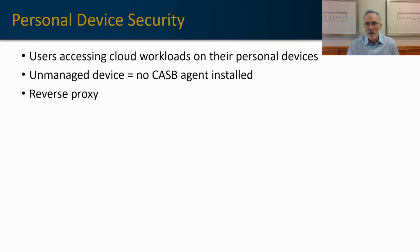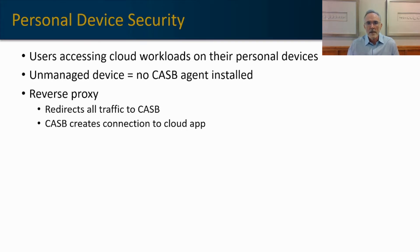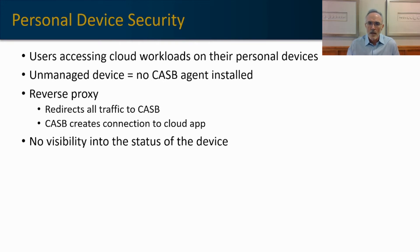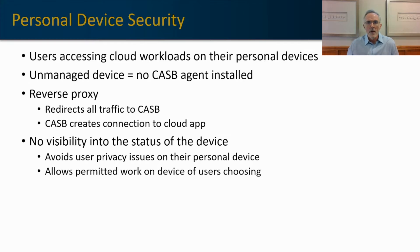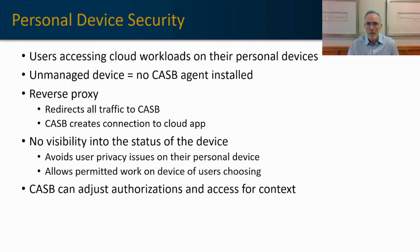CASB resolves that problem by implementing a reverse proxy. When the user attempts to log into the cloud environment, that user will be redirected to the CASB, and the CASB will then make the connection to the cloud environment. This avoids privacy issues, since we're only monitoring the specific traffic flow going into our cloud application without interfering with anything else on the user's machine. CASBs can adjust authorization — they can understand the context of that machine and determine whether to allow broad or narrow access, depending upon the configurations the organization sets.